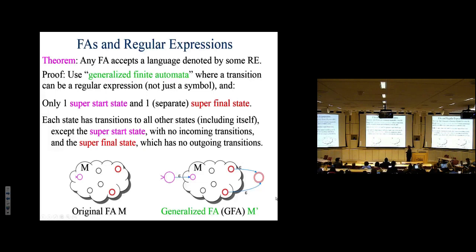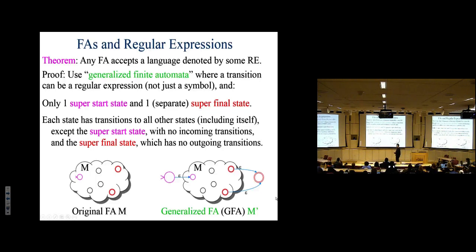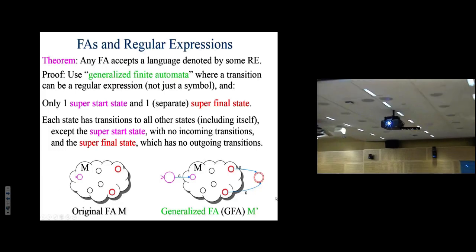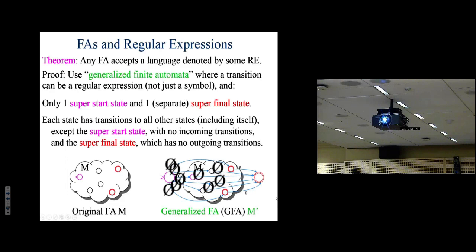We take a regular finite automaton and massage it into a generalized finite automaton by allowing entire regular expressions on the arcs — not just individual characters. An arc can trigger on a regular expression that matches what's ahead in the input stream, so it can transition not just on a character but on an entire long substring.